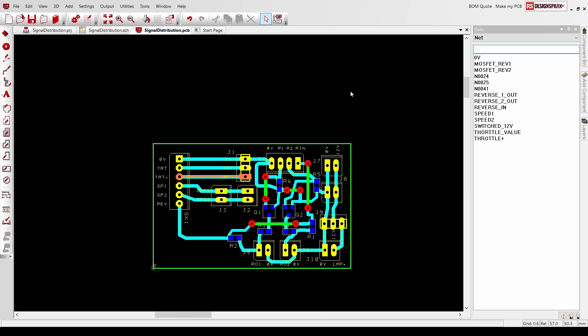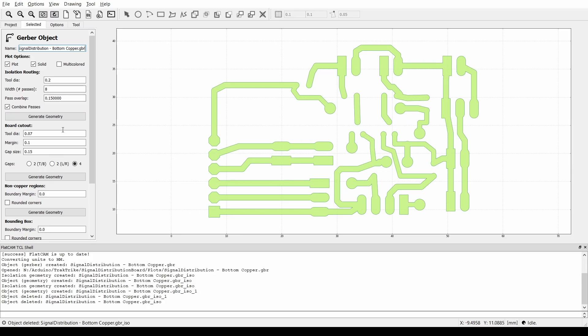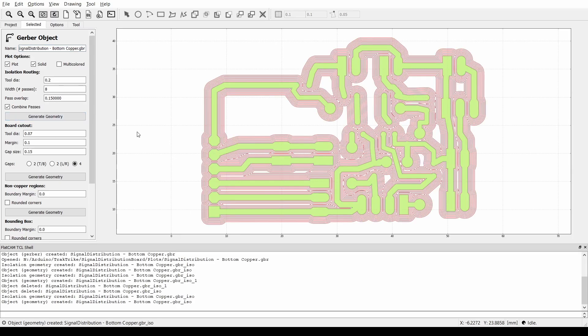I used DesignSpark to create the schematic, got a PCB design with all the inputs that I need, and then used FlatCAM to create G-code for a CNC router, which is what I'm going to use to create the PCB.